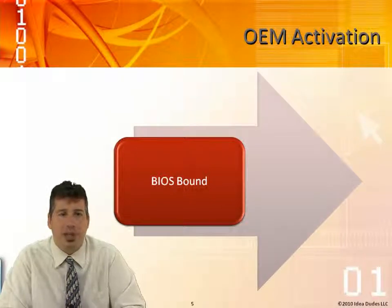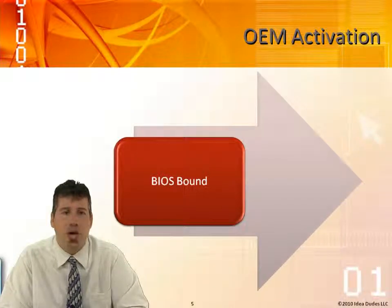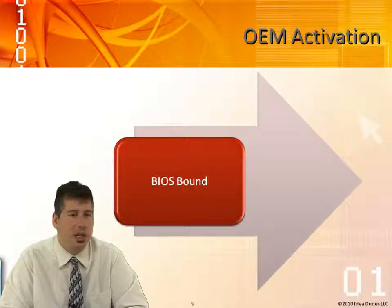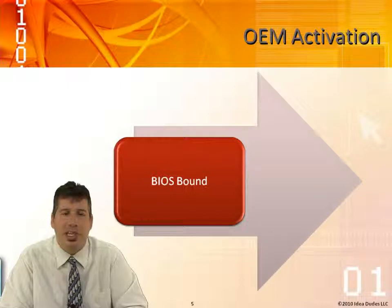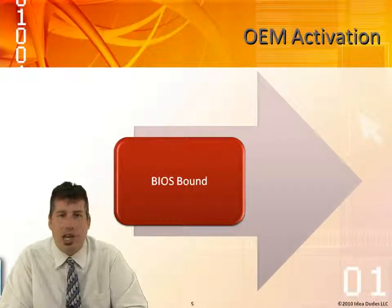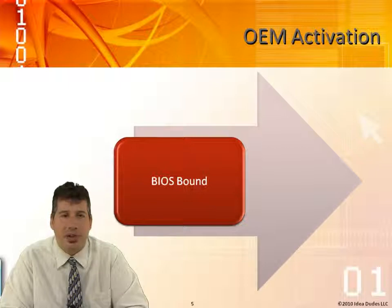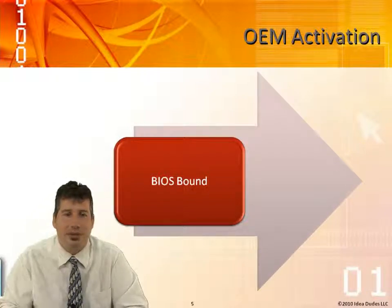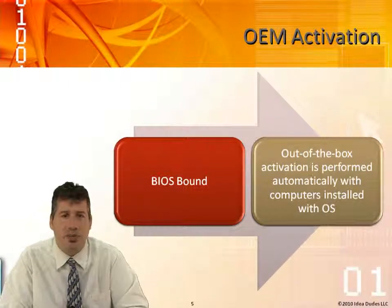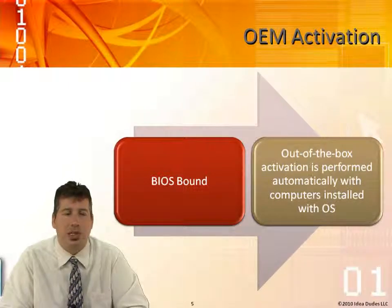OEM activation is BIOS-bound, meaning it's connected to the actual GUID on the machine. When you try to activate it on another machine, it's not going to work. HP, Dell, and many other vendors do this so that somebody cannot take their DVD and install the OS on another machine — it looks at the BIOS and says it doesn't see the key it needs to see. Out of the box, activation is performed automatically when the computer is installed with the OS.